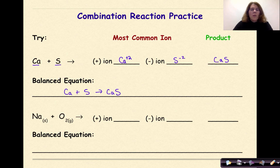As we can see, we have one calcium on the reactant side, one calcium on the product side, one sulfur on the reactant side, and one sulfur on the product side. So there's nothing more that we need to do here.